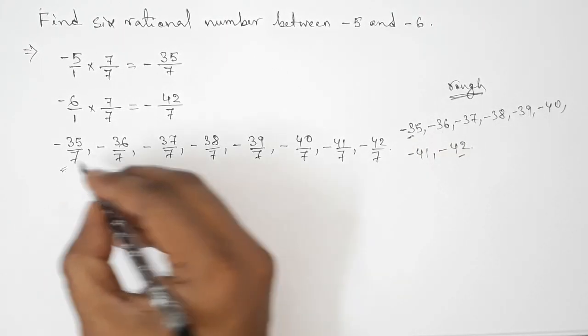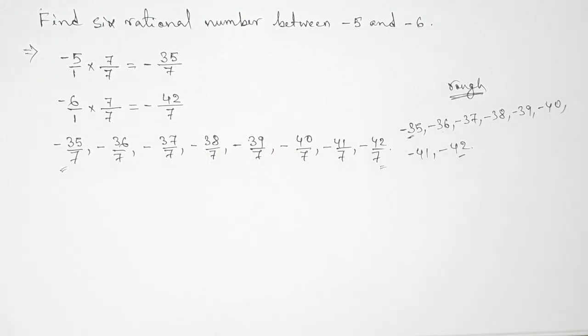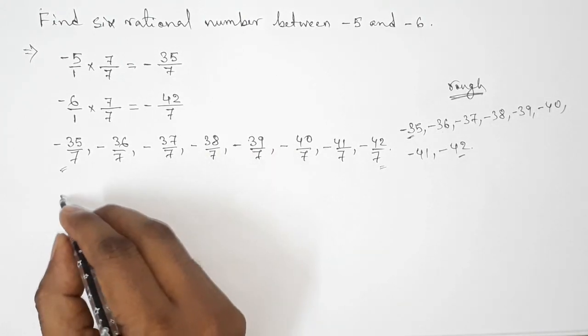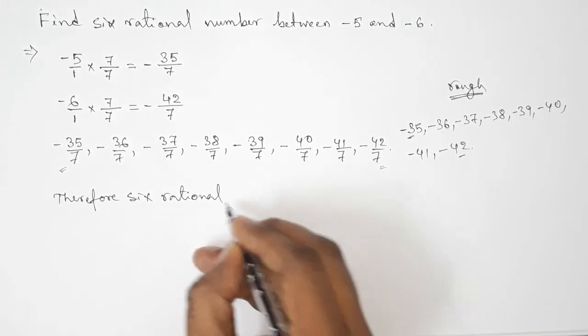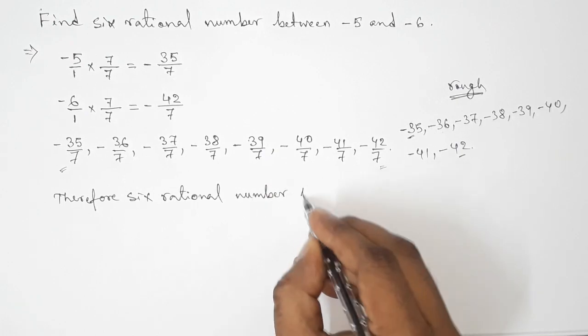So between this and this, these are six required rational numbers. So therefore, the required six rational numbers between minus five and minus six are: